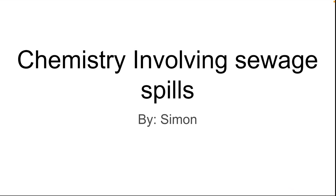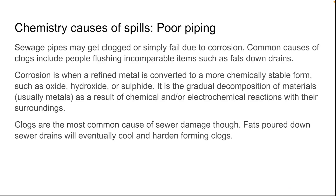The chemistry involving sewage spills, by Simon. Chemistry causes sewage spills, one of them being poor piping. Sewage pipes may get clogged or simply fail due to corrosion. Common causes of clogs include flushing incompatible items, such as fat down the drain.